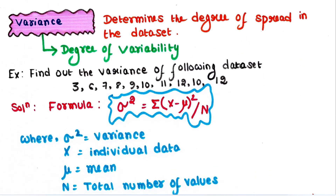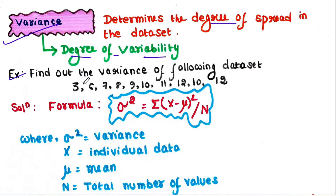Now let's talk about variance. Variance is the measure of dispersion which determines the degree of spread in the data set. In other words, variance is the degree of variability — the more the data is spread, the larger the variance relative to the mean. Let's look at an example: find out the variance of the following data set.